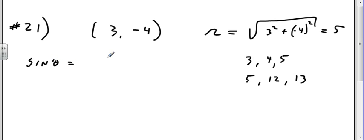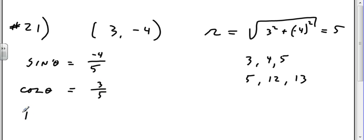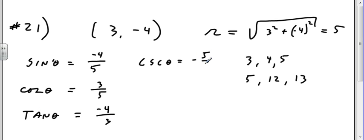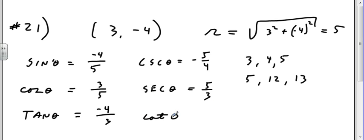Sine of theta: the y component divided by the radius — that's minus 4 over 5. Cosine of theta: the x component divided by the radius — that's 3 over 5. Tangent of theta: the y guy divided by the x guy — that's minus 4 over 3. Cosecant of theta: minus 5 over 4. Secant of theta: 5 over 3. Cotangent of theta: minus 3 over 4.